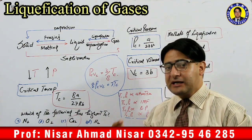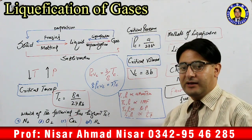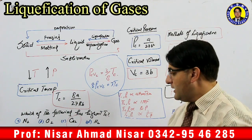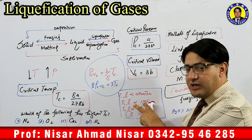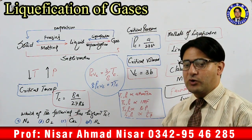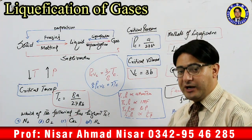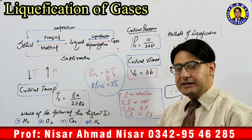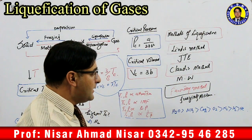Critical temperature and pressure depend on intermolecular forces — when attraction between molecules is greater, critical temperature and pressure are higher. Critical temperature and pressure also have a direct relationship with boiling point: when boiling point is higher, critical temperature and pressure are higher. Critical temperature and pressure are inversely proportional to liquefaction point — the gas with a lower liquefaction point has lower critical temperature and pressure.